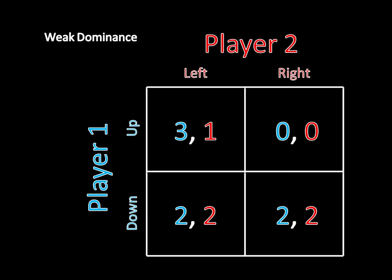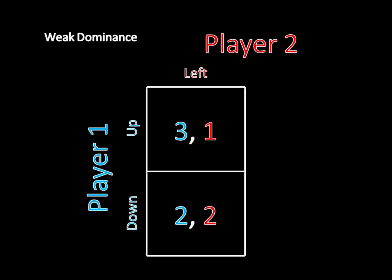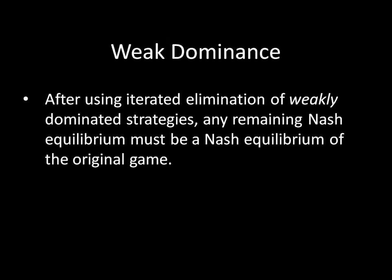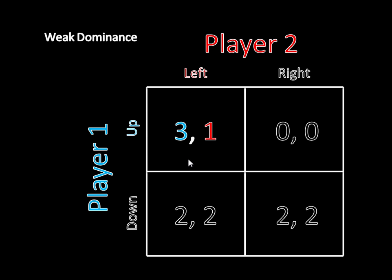Imagine we treat weak dominance just like strict dominance and work through iterated elimination of weakly dominated strategies. You can do that, and what you'll get is a Nash equilibrium of the original game. If we eliminate right — because right is weakly dominated — we're left with left. Then it's just player one's decision: three is greater than two, so he goes up. That leaves up-left as a Nash equilibrium.